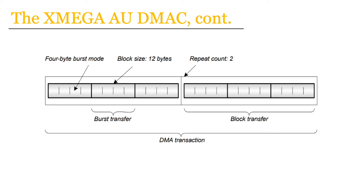In this next slide we see a depiction of one specific instance of the three types of units previously discussed. Specifically, for every burst there are four bytes, for every block there are 12 bytes or three bursts, and for every transaction there are two blocks. Again, this is one very specific instance of how these three units could be instantiated or configured, but it serves as a useful example.